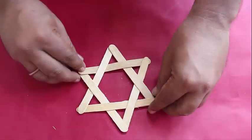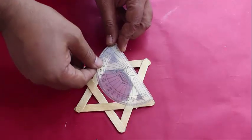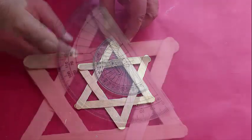Now with the help of a protractor you can measure one angle and it would be 60 degrees.